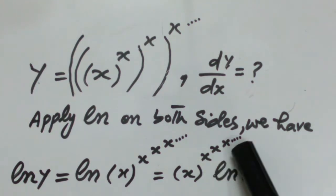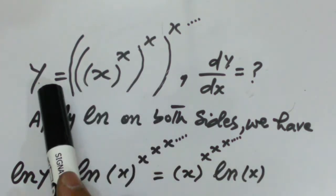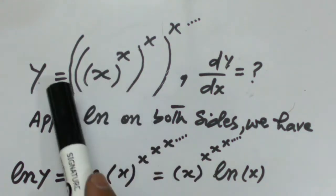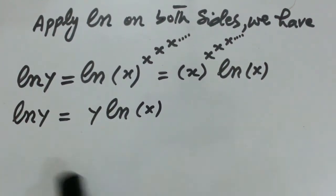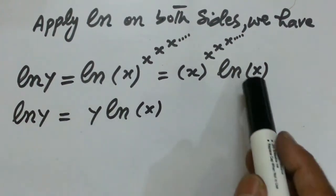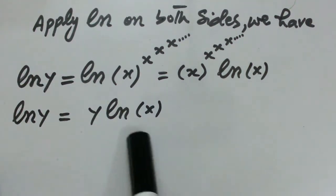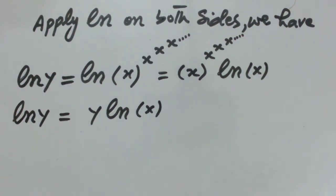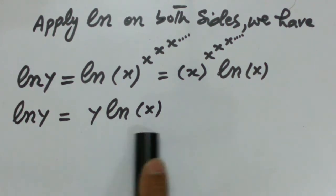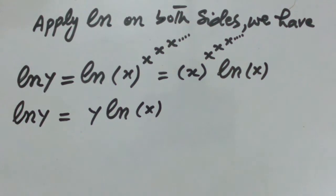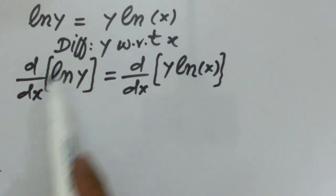Since x^(x^(x^...)) = y, we substitute and replace this quantity by y. After this multiplication, we get: ln(y) = y · ln(x). This is the equivalent function of the original function, and now we can calculate the derivative of this type of function easily. The right-hand side is a product of two quantities: y and ln(x).